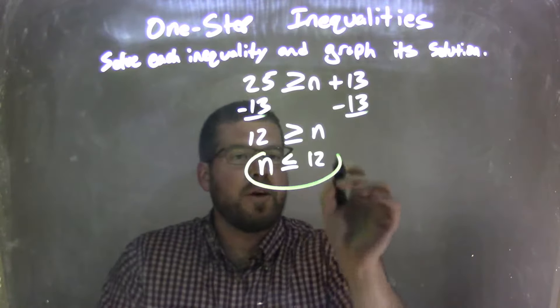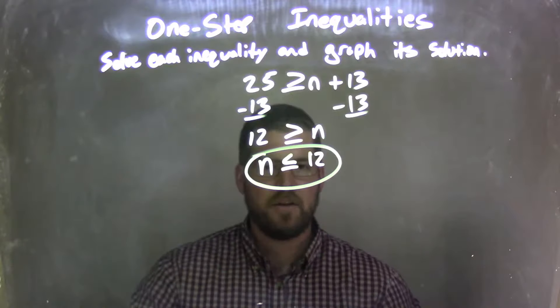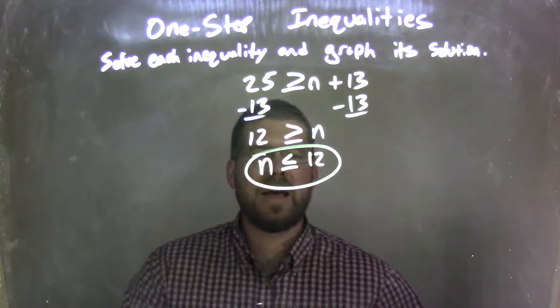Anyway, I have a final answer though, it's by itself, it's isolated, looks nice and neat, n is first. So n is less than or equal to 12. Now I need to graph them.